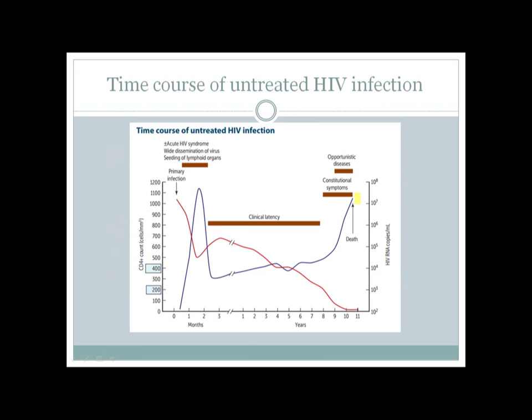Here is the time course of an untreated HIV infection. The graph shows two main determinants: CD4-positive cell count and HIV RNA copies. During primary infection, HIV replicates very rapidly, so HIV RNA copies are very high. There is wide dissemination of virus and seeding of lymphoid organs, and there can be lymphadenopathy. Later, as immunity tries to reduce the HIV burden, the HIV virus level drops.